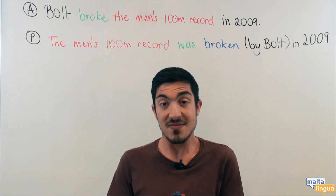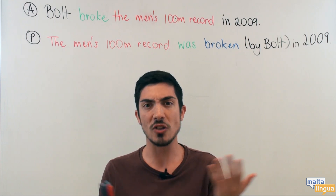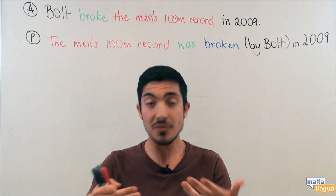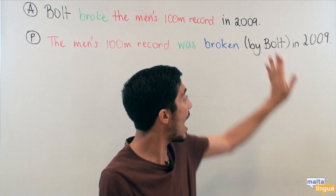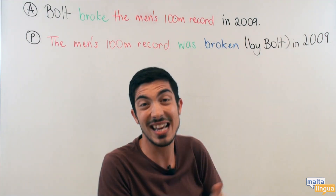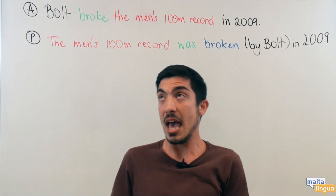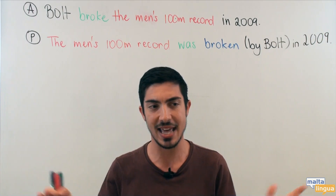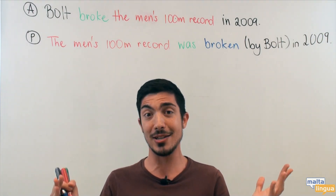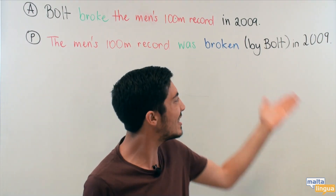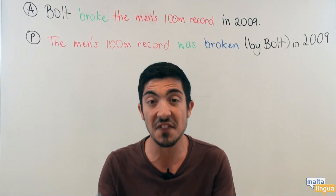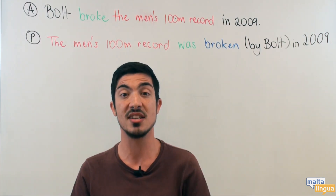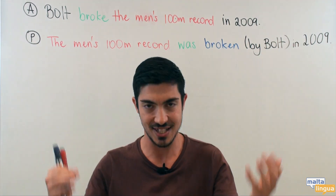Sometimes the person who did it is not known. Maybe I don't know who Usain Bolt is, but I know that the record was broken, so I might leave him out completely because I just don't know who he is. In athletics, everybody knows Bolt, everybody knows Usain Bolt, everybody knows about the record. So because the person who did it is obvious, we might just say the men's record was broken in 2009 and leave the person out because it's obvious.